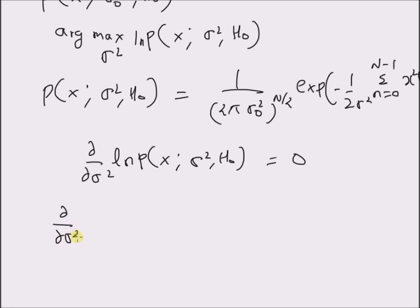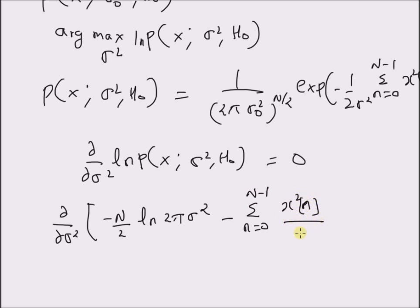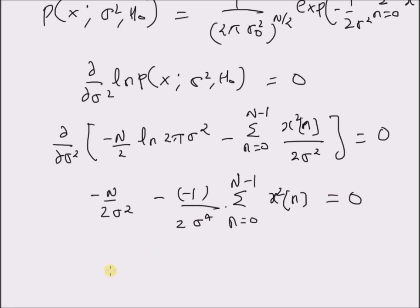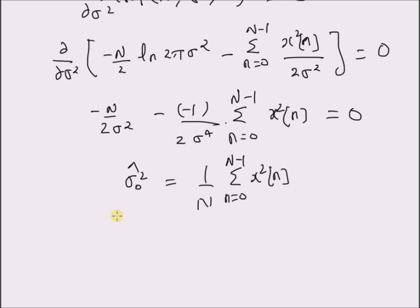The derivative of the first term is −N/(2σ²). The second term contributes +(1/(2σ⁴)) Σ x²(n) = 0. Solving this gives the maximum likelihood estimate of the variance under the null hypothesis, sigma-zero-squared-hat = (1/N) Σ x²(n).